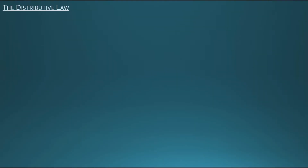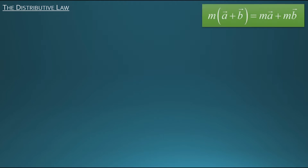In this video we're going to look at how the distributive law works for vectors. Specifically we're going to use diagrams to show why a scalar m times the sum of vectors a plus b is equal to m times vector a plus m times vector b. To do so we'll consider three cases, the first of which is the case where m is a positive number.